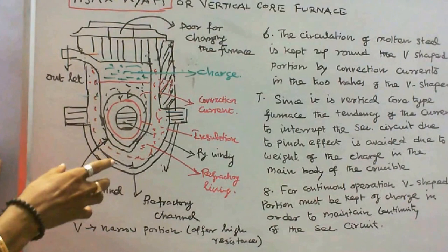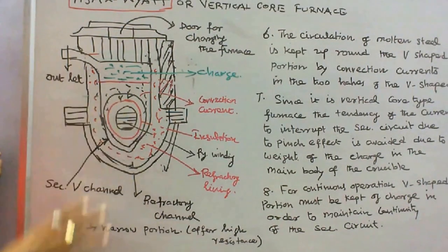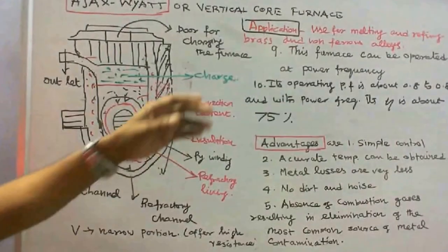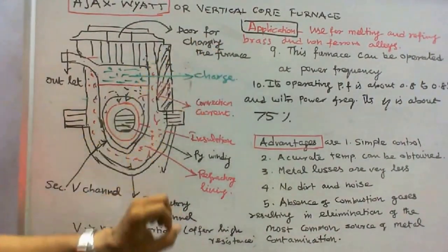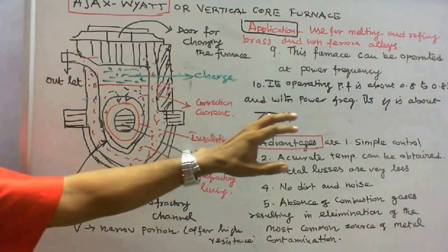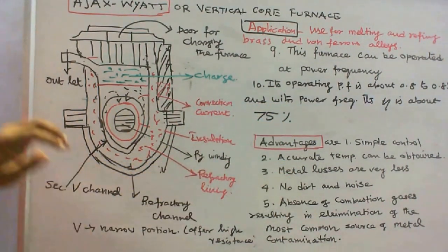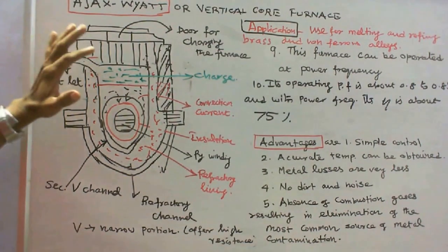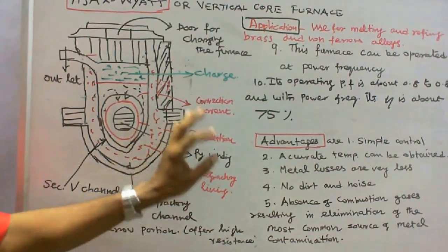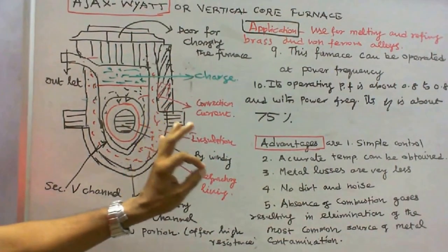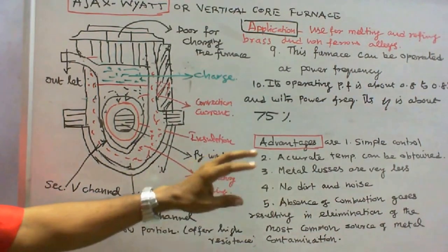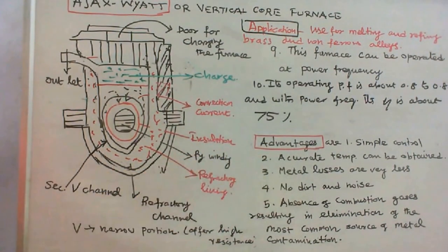For continuous operation, the V-shaped portion must be kept full of charge in order to maintain continuity of the secondary circuit. The furnace can be operated at power frequency, and its operating power factor is about 0.8 to 0.85. With power frequency, its efficiency is about 75%. The advantages of Ajax-Ward Furnace are: 1. Simple control; 2. Accurate temperature can be obtained; 3. Metal losses are very less; 4. No dirt and noise; 5. Absence of combustion gases, resulting in elimination of the most common source of metal contamination.